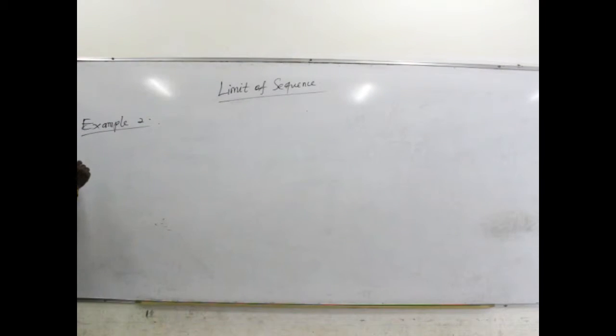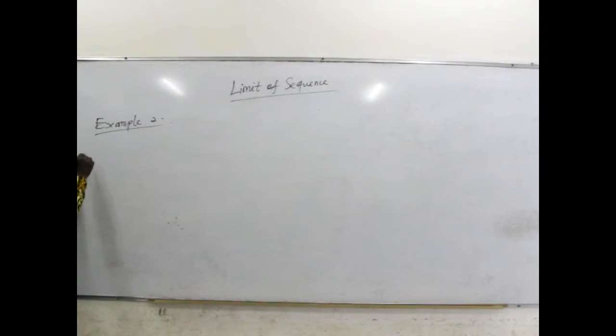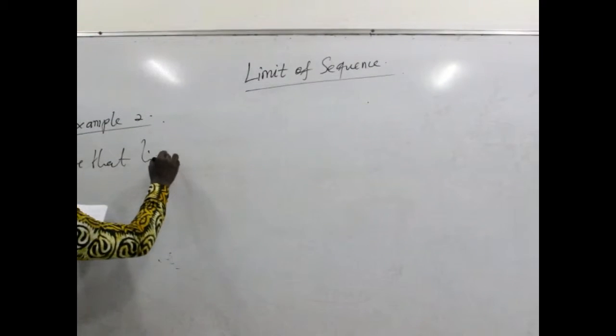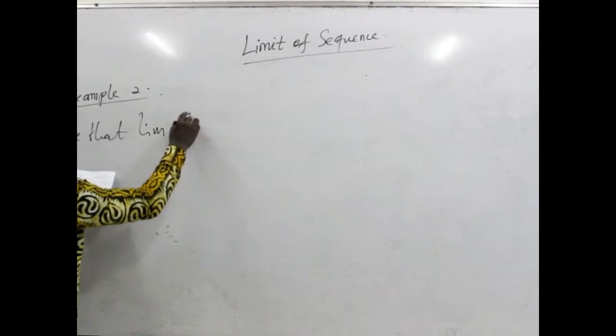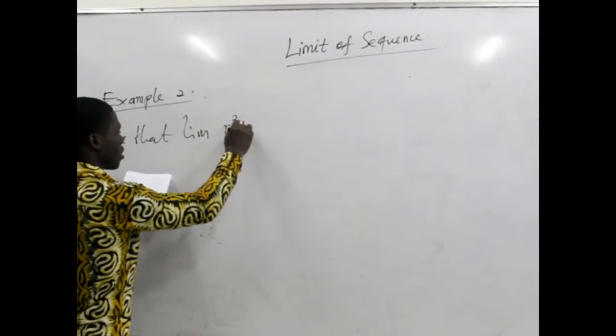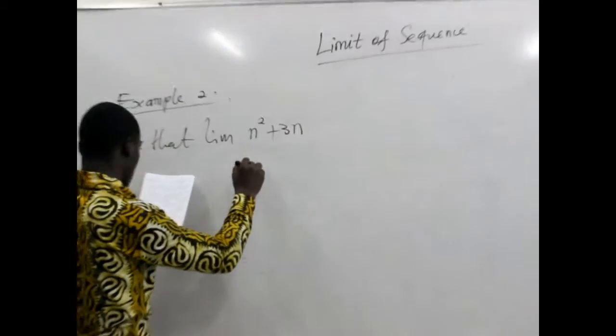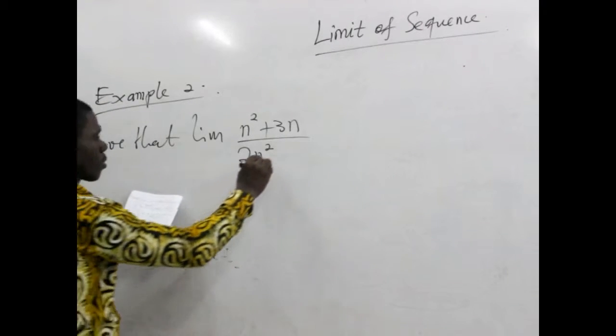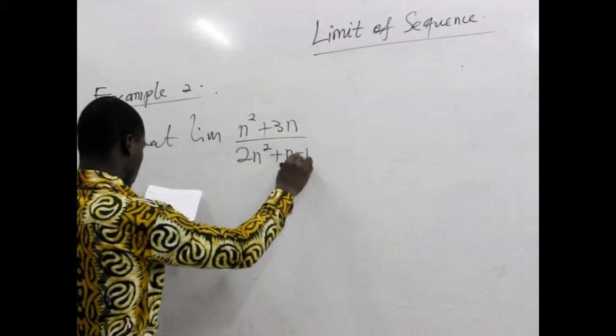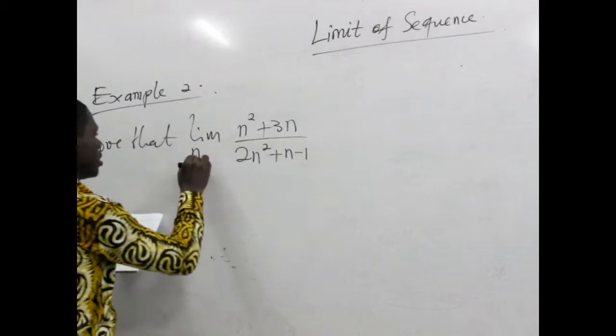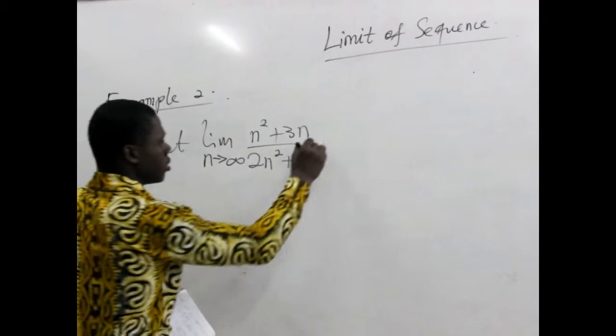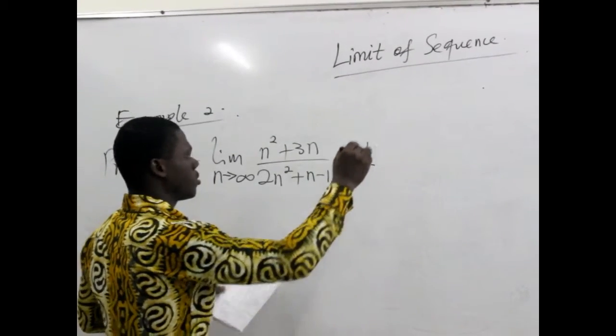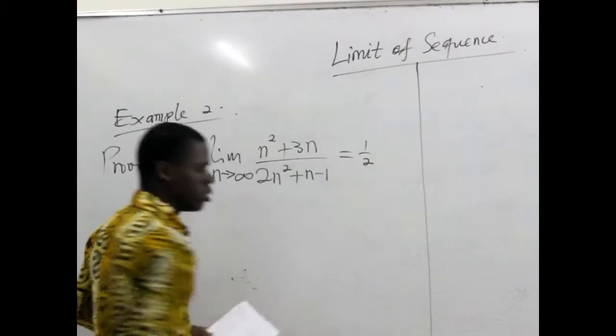We are proving that, so prove that the limit of n squared plus 3n divided by 2n squared plus n minus 1, as n approaches to infinity, is equal to half. That's what we are proving.